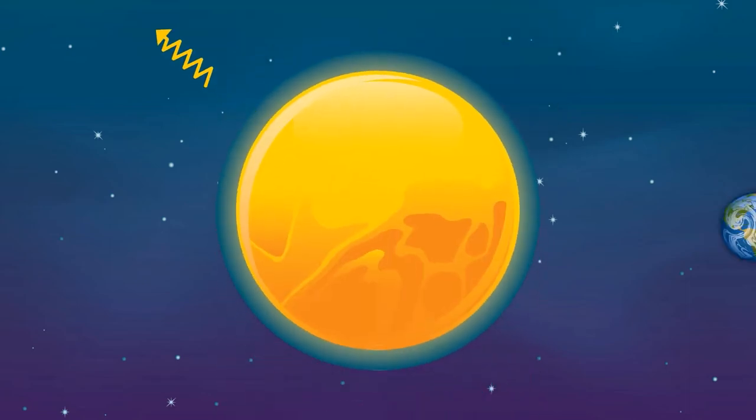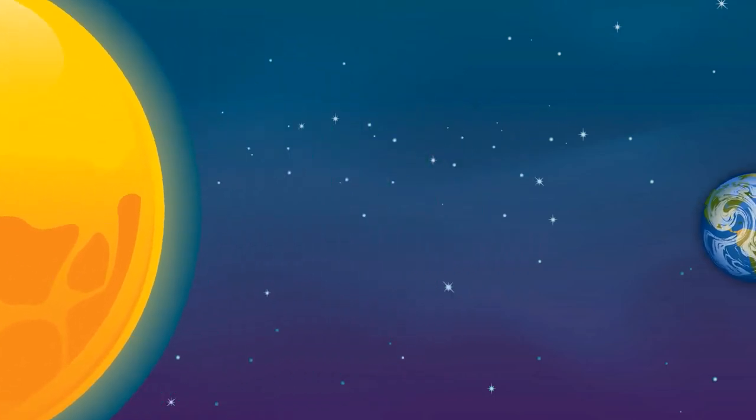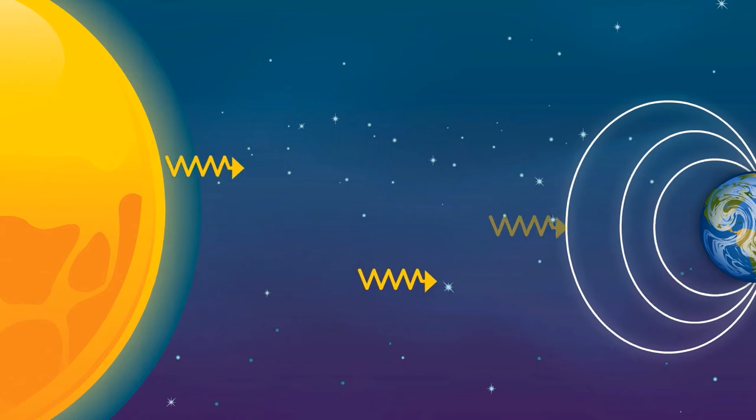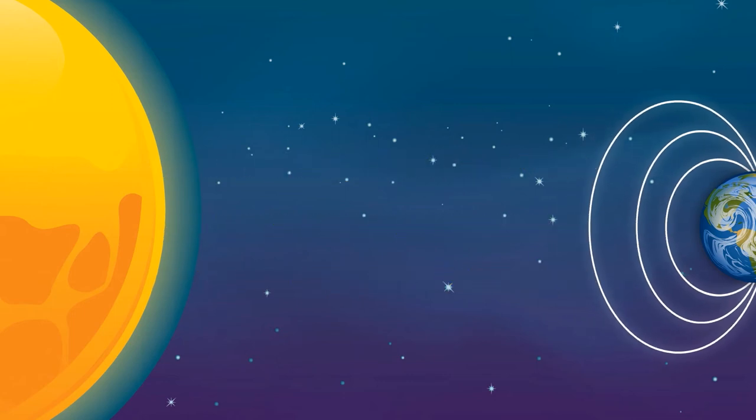Space weather events radiate from the Sun in different directions. Most of the time, it's away from Earth, but sometimes it's directly towards us, and could even be powerful enough to reach us.